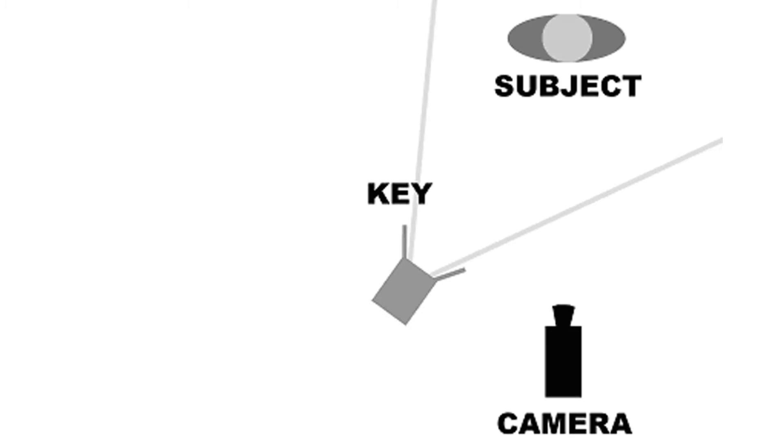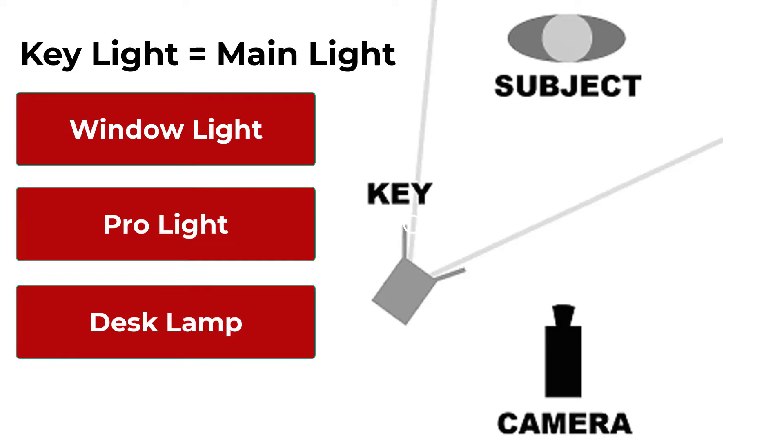The main light we use is called the key light. It can be a window light, a professional lighting fixture, or a desk lamp — whatever is your primary light source is your key light. Where you place it is usually determined by the background and which angle the light will hit it. In this setup, my key light is off to the left side of the camera so the light cuts across me and falls into the room. Placing the key light on the right would light up the lighter wall behind me, and the brightest thing on screen should be my face, so I want the background darker.